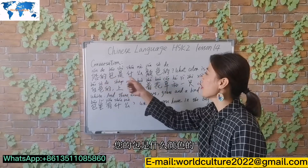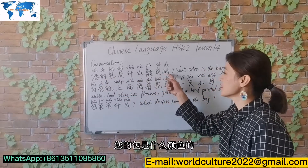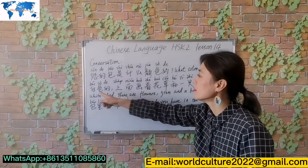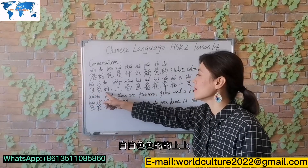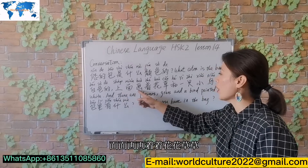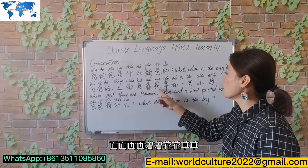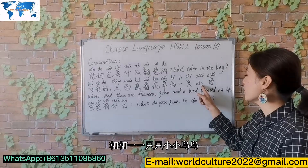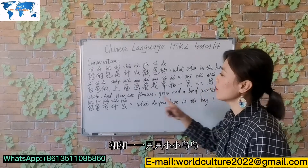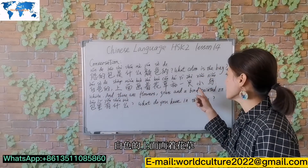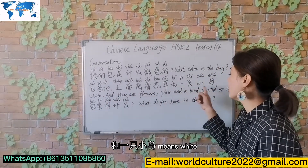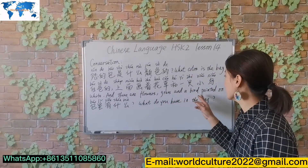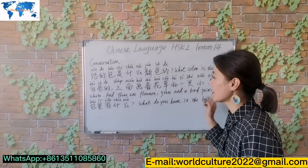您的包是什么颜色的 means 'What color is the bag?' 白色的，上面画着花草和一只小鸟 means 'White, and there are flowers, grass, and a bird painted on it'.